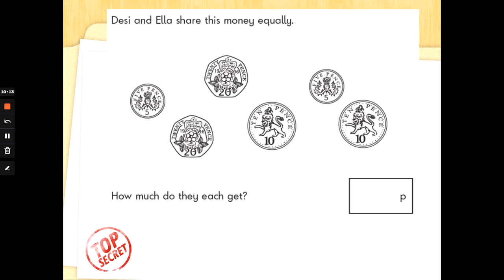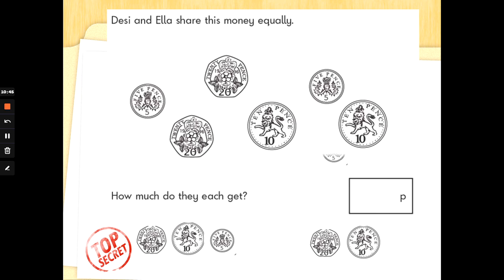Desi and Ella share this money equally. How much do they get each? Let's take a look at the coins we've got. We've got a 5p, a 20p, a 20p, a 10p, a 5p and a 10p. Now, in the task, if you're doing this at school, you could cross them out. This is what I would do. I'm going to imagine I give a 20p to the boy and a 20p to the girl. I'm going to give a 10p to the boy and a 10p to the girl. I'm going to do equal shares. I've only got the 5ps to share out. I'm going to give a 5p for the boy and a 5p to the girl. Because there's two of each coin and there's two children. So, how much does one child get? We've got 20 add 10. Use your 10s. 20 add 10 is 30 and a 5p. What's 30 add 5? 35 pence. Good sharing. Well done.